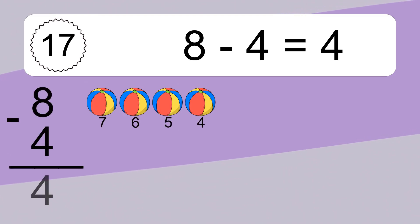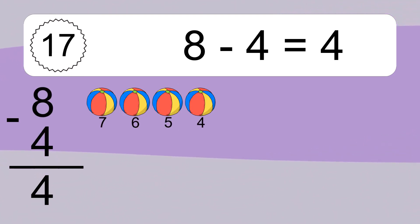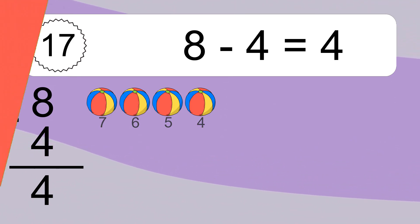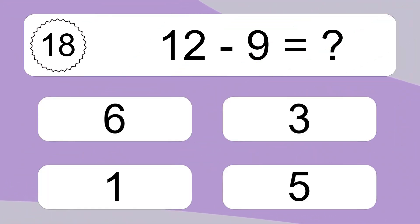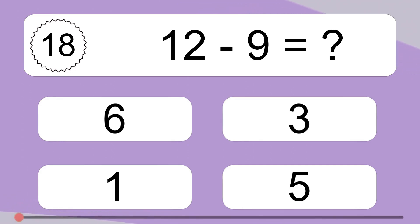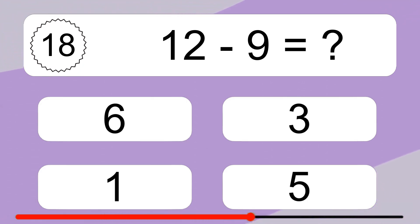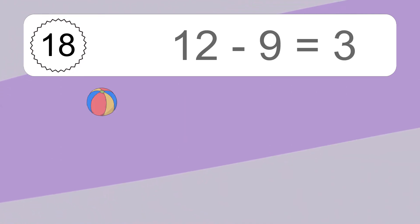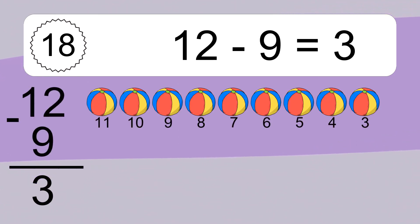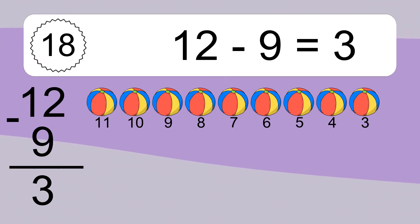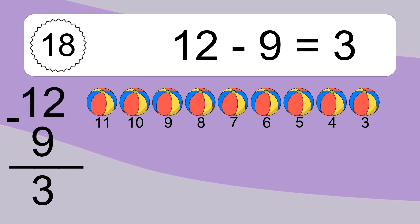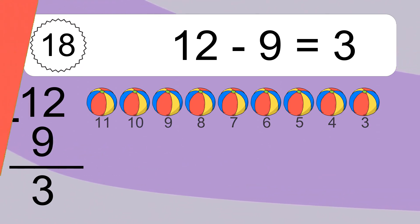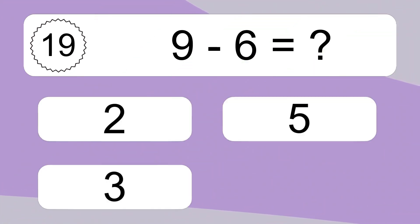8 minus 4 equals what? 8 minus 4 equals 4. Let's count it: 7, 6, 5, 4. 12 minus 9 equals what? 12 minus 9 equals 3. Let's count it: 11, 10, 9, 8, 7, 6, 5, 4, 3.